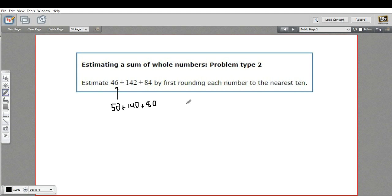So now this problem should be a little bit simpler. We have 50 plus 140 plus 80. So zeros add up to 0, and 5 plus 4 is 9 plus 8 is 17. So we get 270.